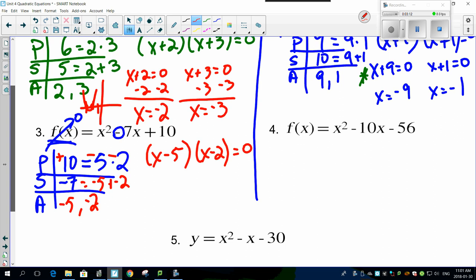x - 5 = 0, x - 2 = 0. So x = 5, x = 2. We're cruising here, look at that! There's your two solutions.